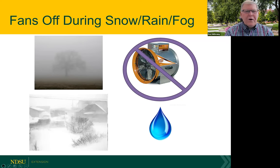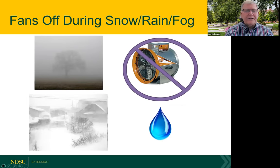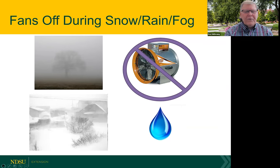From a grain storage standpoint, it's important that we're not adding moisture into the bin. Aeration fans should be off any time it's snowing, raining, or if we have fog. With fog, we have suspended water droplets in the air. This isn't going to rewet the whole bin, but it would put moisture into the underfloor space and the bottom layer of grain that would need to be removed later. Watch the weather forecast and manage fan operation appropriately.